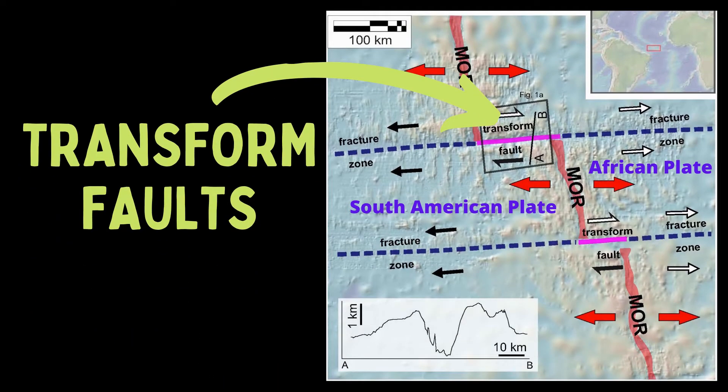The spreading is in the east-west direction. The offsets you see that are oriented east-west are transform faults along which the two diverging plates simply slide past each other. These transform faults link the different spreading segments and have the relative motion shown by the arrows.